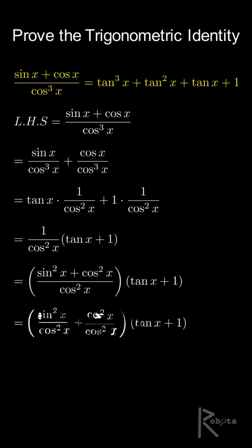That becomes sine squared x over cosine squared x plus cosine squared x over cosine squared x, which simplifies to tan squared x plus 1.